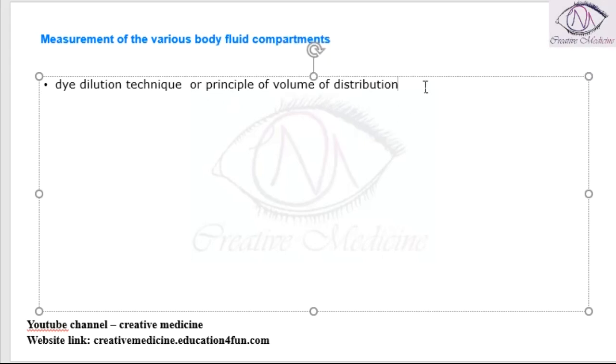According to the dye dilution technique, a known quantity of a soluble dye or indicator is added to an unknown volume, and we leave it to equilibrate.